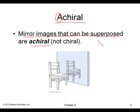Mirror images that can be superimposed — that is, identical — means that object is achiral. An example is a mirror image of a chair: if you take the mirror image of a chair, you get the same chair. So if the mirror image is the same, the original object is achiral.